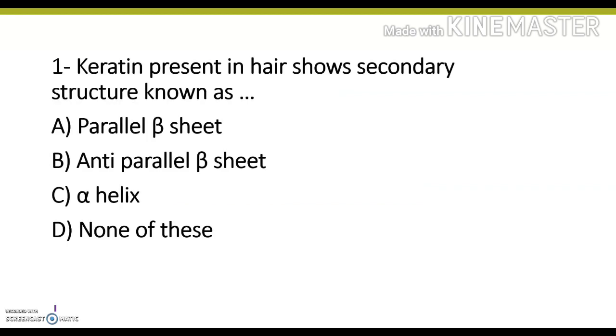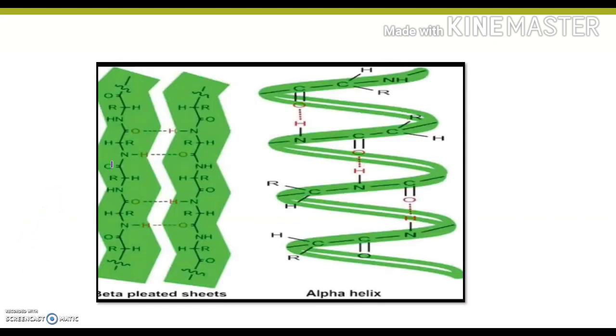Keratin present in hair shows secondary structure known as parallel beta sheet, antiparallel beta sheet, alpha helix, or none of these. The correct answer is option C, alpha helix. This is the alpha helix structure of keratin protein.